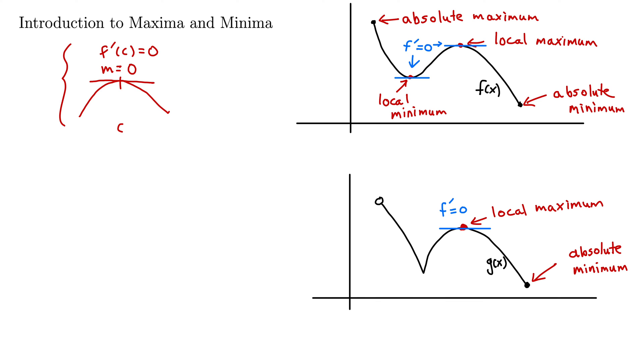But right down here, where the graph gets pointy, we also have a local minimum, but we know that the derivative of the function is not defined at so-called corners like that, where the graph goes pointy and turns around and comes back. So this is indeed a local minimum, but the derivative is undefined.